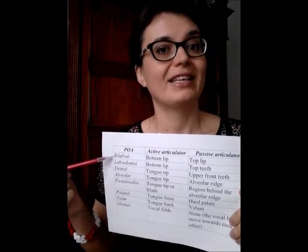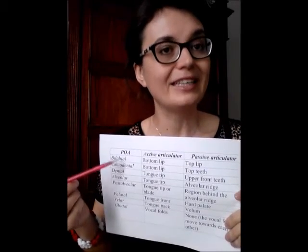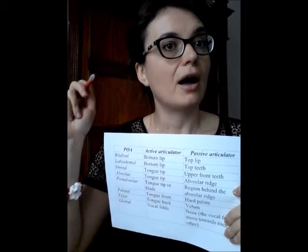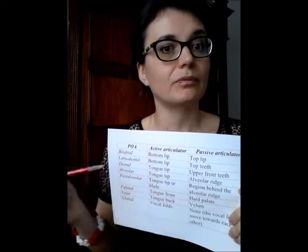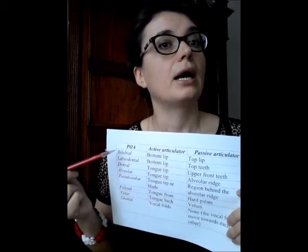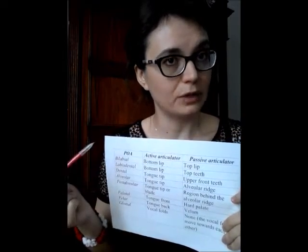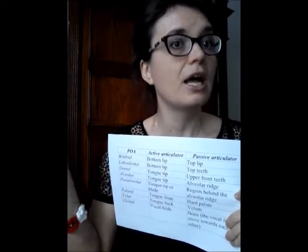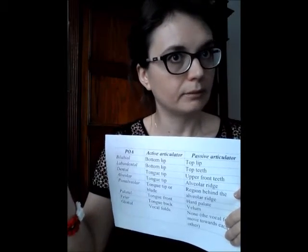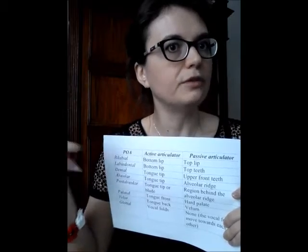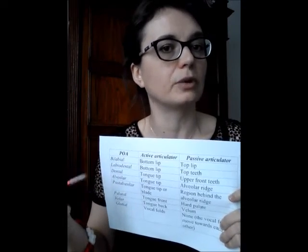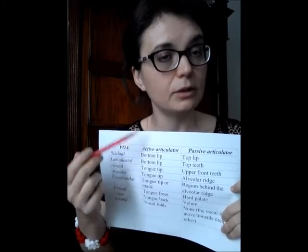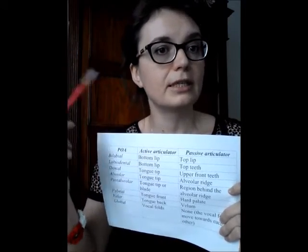You might notice that the name itself tells you where exactly the articulation takes place. For example, bilabial sounds — it means that both lips are involved in the production of this speech sound. The bottom lip, which is the active articulator, moves towards the top lip.